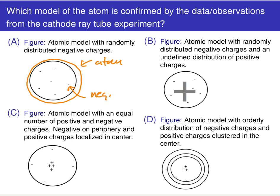Choice B is an atomic model with randomly distributed negative charges and some undefined distribution of positive charges. Does J.J. Thomson's model support something like this?